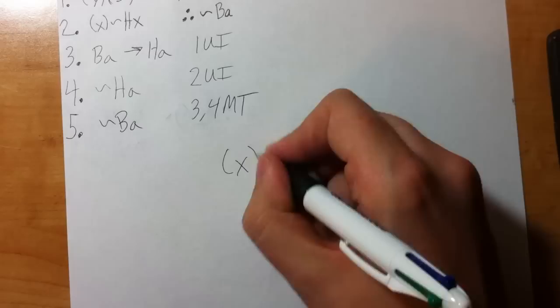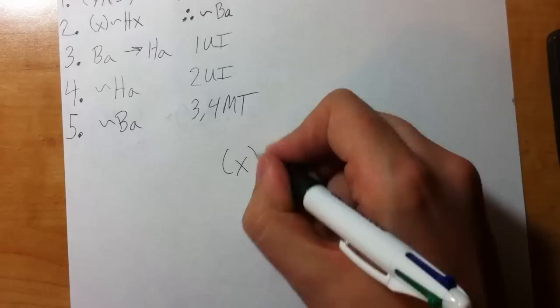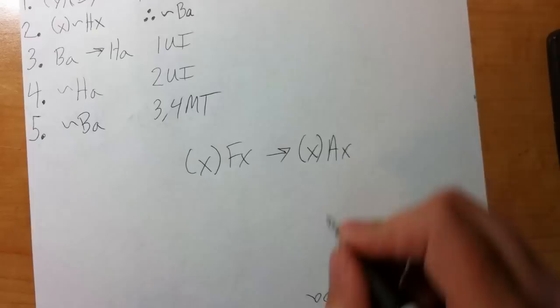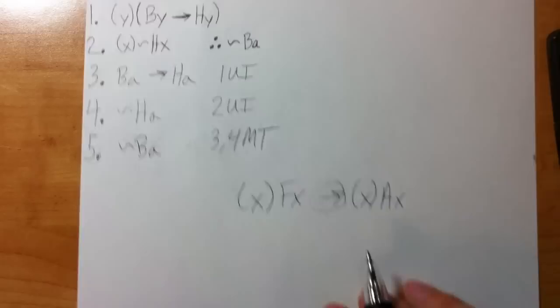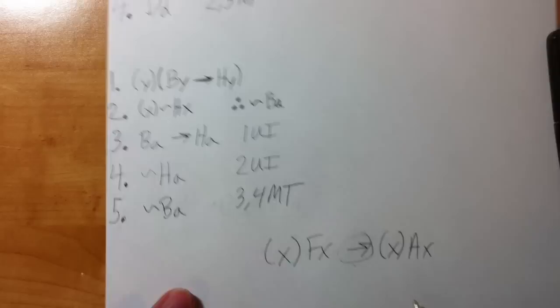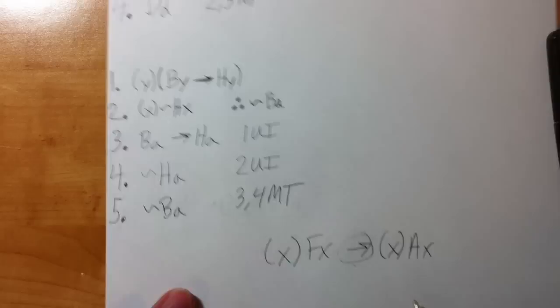Here's an important question: can we do UI on a line that starts with a universal quantifier but whose main connective is an arrow — a conditional — with universal quantifiers on both sides? No. That line is a conditional, not a universally quantified statement. Compare it to a line where everything is inside parentheses under a single universal quantifier — that's the difference. Don't try to do UI on a conditional like that. No UI.